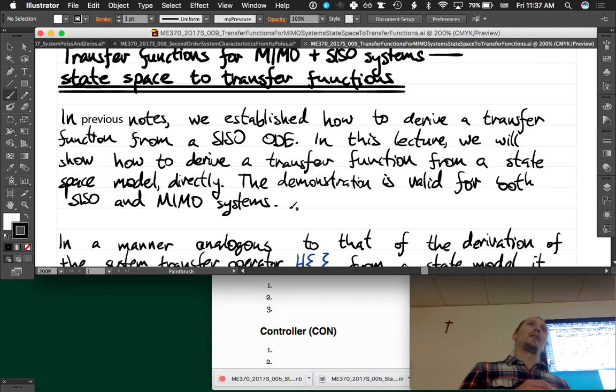We do know how to go from a state space model to an input output ODE and a transfer function, but that's really only valid for the case we have one input and one output. Let's find the case for when you have multiple inputs and multiple outputs.